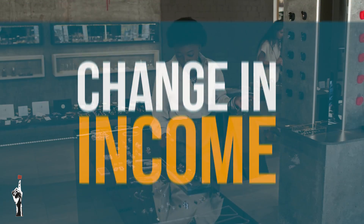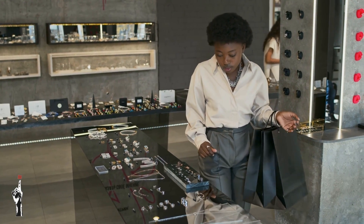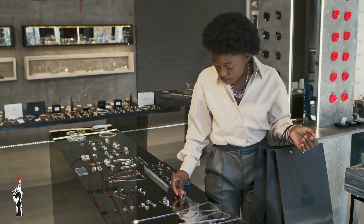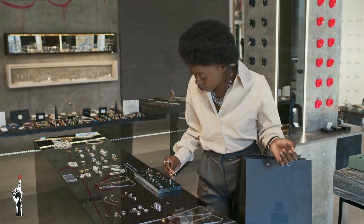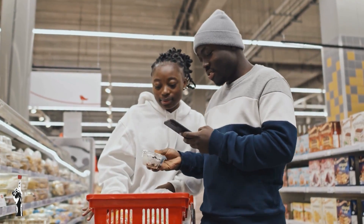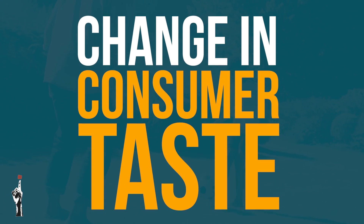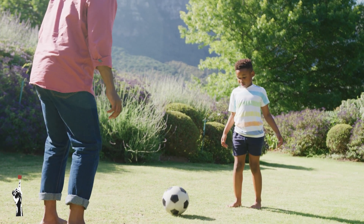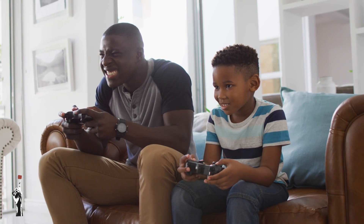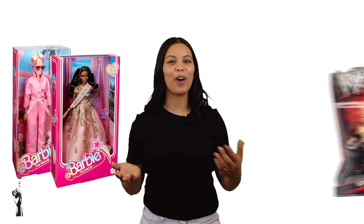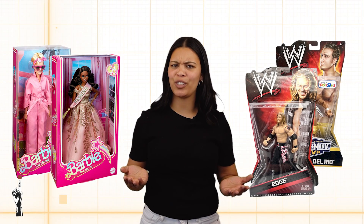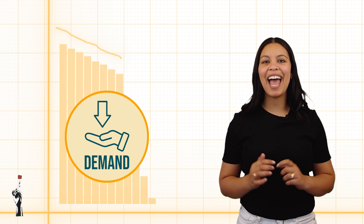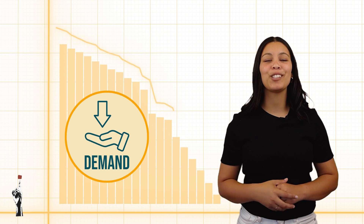The first factor is the change in income of consumers. When consumers earn more income, they tend to buy more items, but if they earn less money, they will buy less of an item. The second factor is the change in consumer tastes. As you grow older, you have certain needs and wants that you are no longer interested in. For example, do you still play with Barbie dolls or action figures? Probably not — so the demand for these products has decreased because your taste changed.